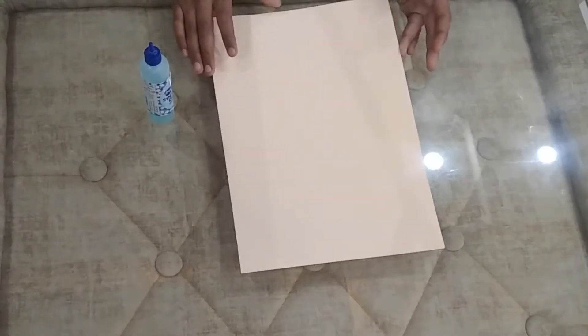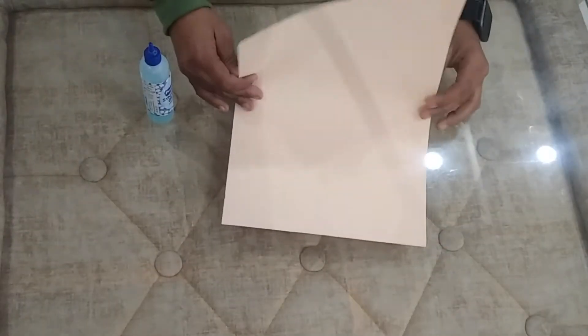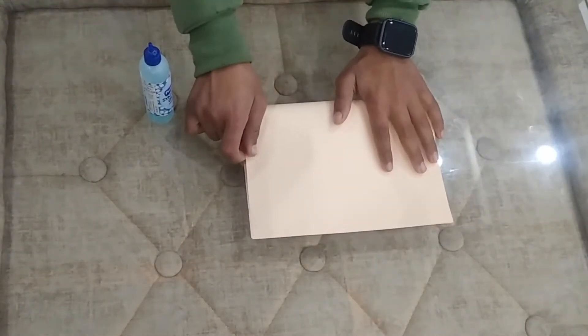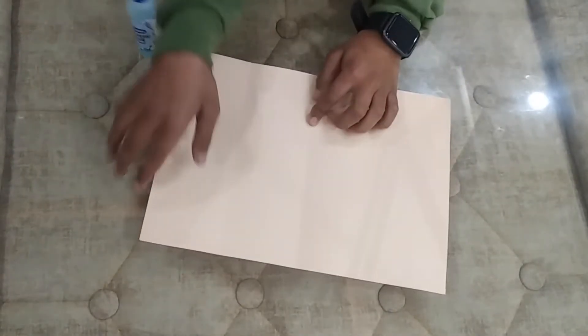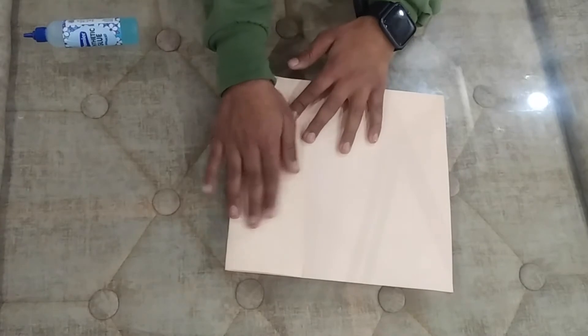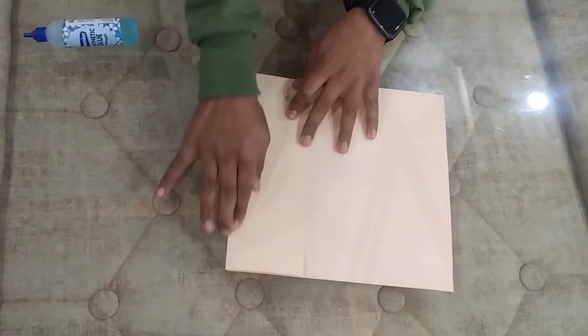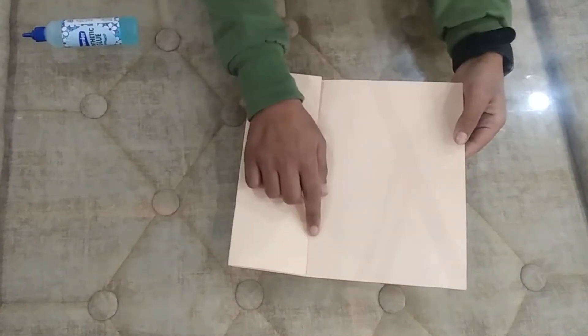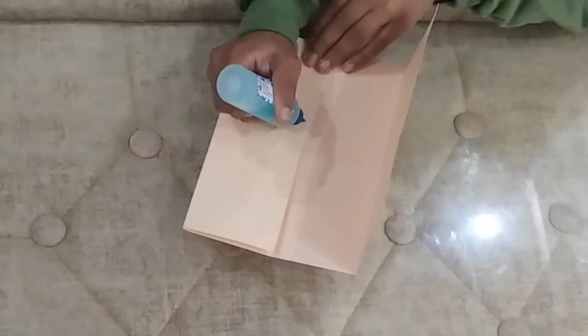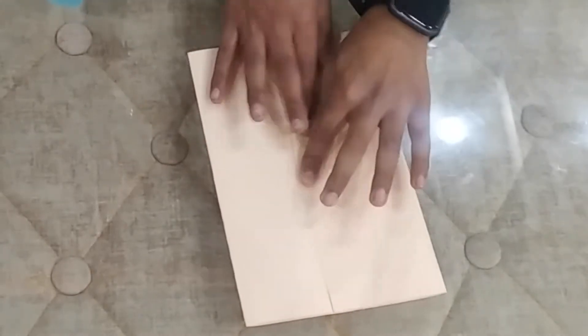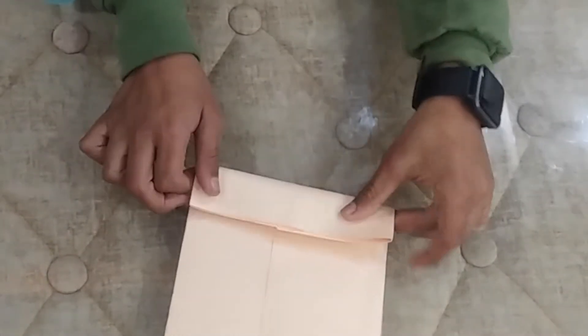First we need to fold this paper in half. Now we will open it. Here we will get a mark. On this side we will place it on the mark, and on this side as well. Now we will fold it in three fingers.